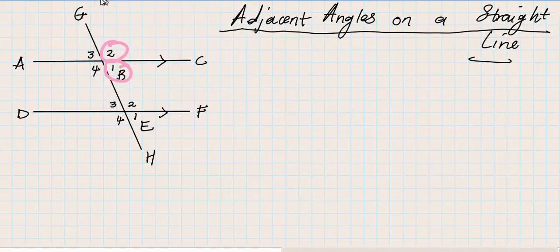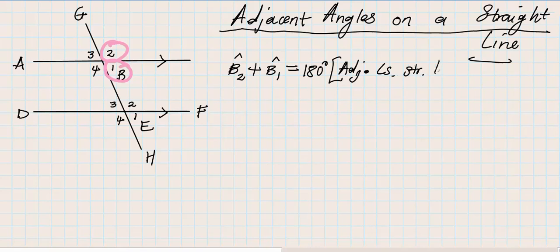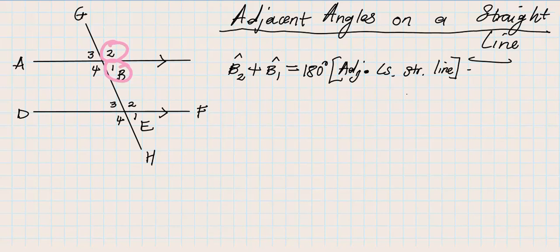When you want to mention adjacent angles on a straight line in your answer, here's what you do: angle B2 plus angle B1 equals 180 degrees. Then you provide a reason — you say 'adjacent angles, straight line.' You don't have time to write the whole sentence in an exam. I will fully understand that what you mean is: when I add B1 and B2 I get 180 degrees because these are adjacent angles on a straight line. Now please pause this video and find three pairs of adjacent angles on a straight line.